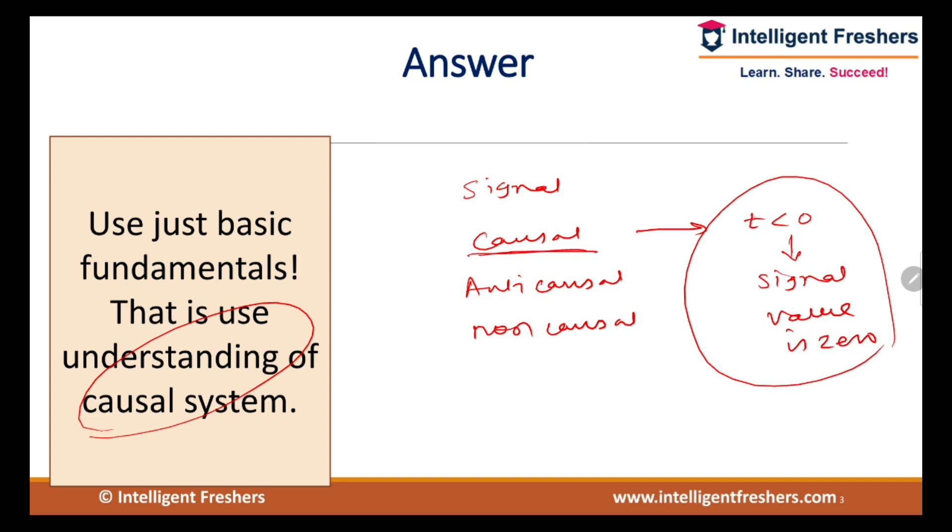So causal signal we can represent like this, something like this. This is y(t) and this is time instance t. Here all time instances t less than zero, the signal value is zero. This is t greater than zero.